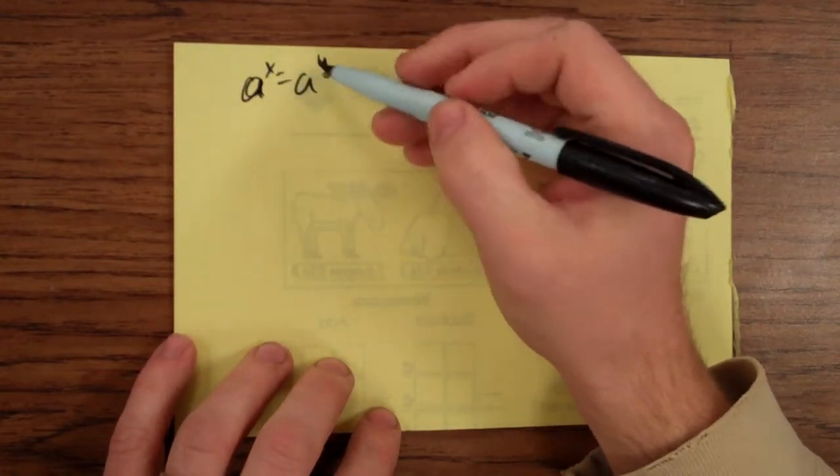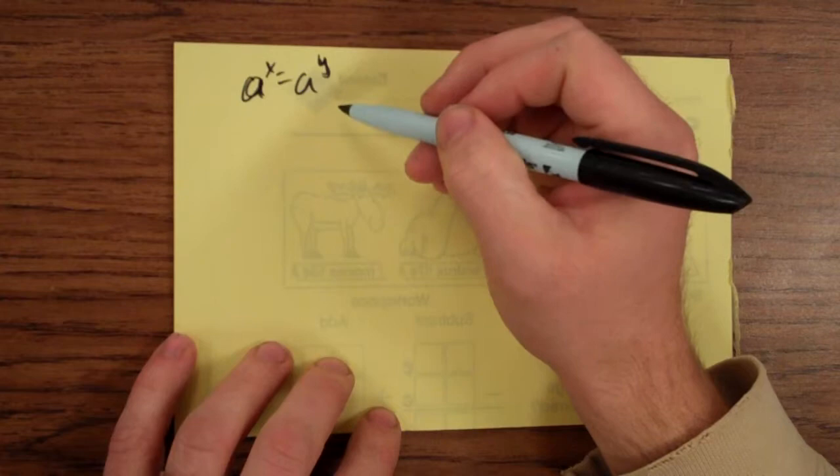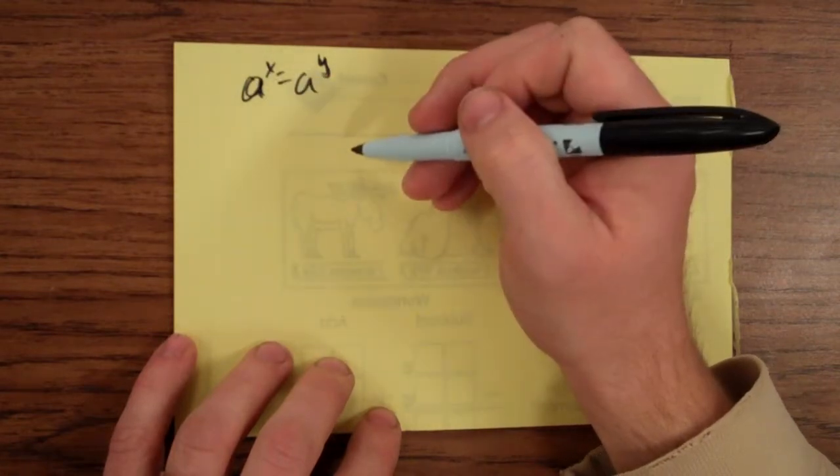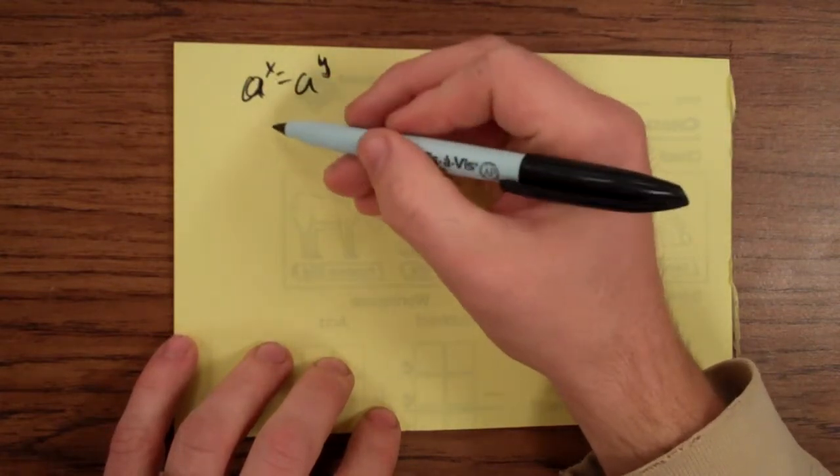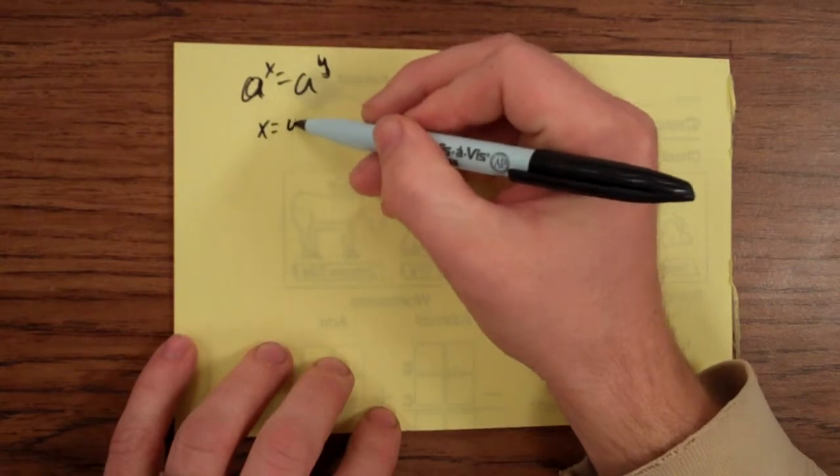Well, if a is raised to the x, and a is raised to the y, and these two things are equal to each other, then it only makes sense that x would be equal to y.